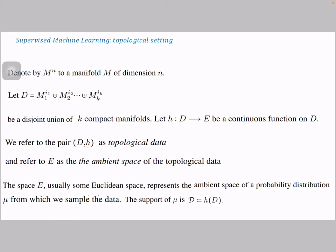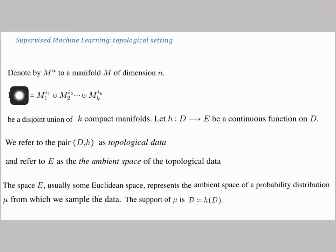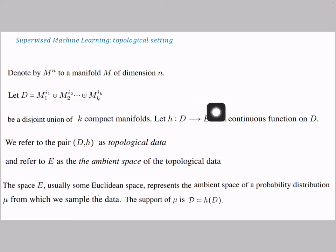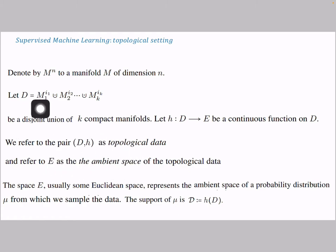Let's introduce the supervised machine learning problem from a topological point of view. I'll denote a manifold M of dimension n by M^n, and denote by D a disjoint union of manifolds with various dimensions: D = M^{i_1} ⊔ M^{i_2} ⊔ … ⊔ M^{i_k}. I'm going to define topological data to be a continuous function h from D to some ambient space E, where E is usually a Euclidean space. I'll call the pair (D, h) topological data, and E the ambient space. This setting corresponds to the statistical setting: E is the ambient space of the probability distribution we introduced earlier, and the support of this probability distribution is the image of the function h.